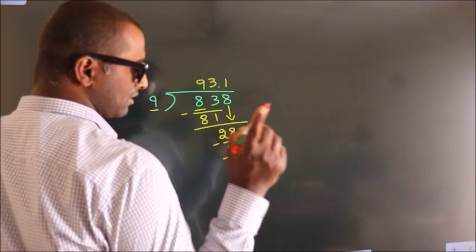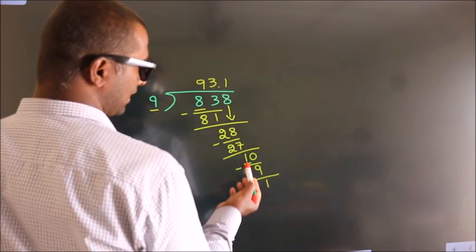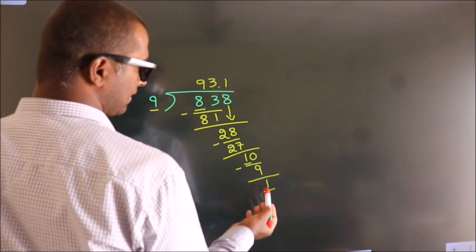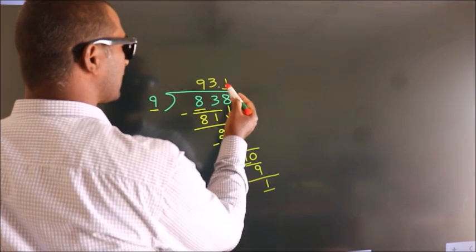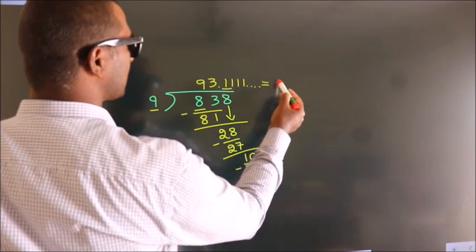Now you observe, we had 1 here and we got 1 again. That means this number keeps on repeating. So this is our quotient.